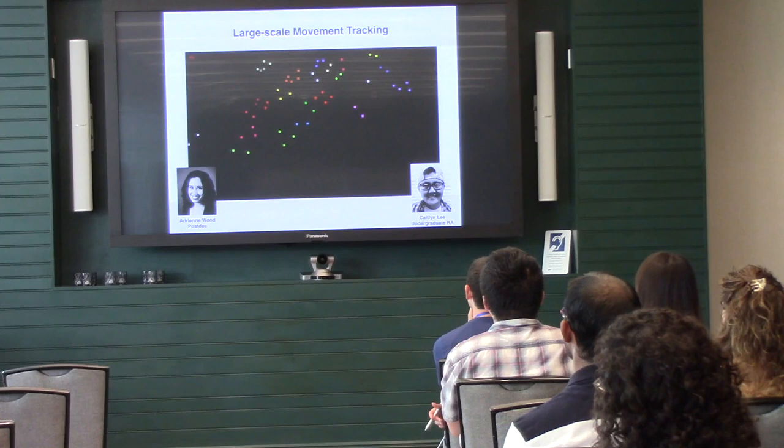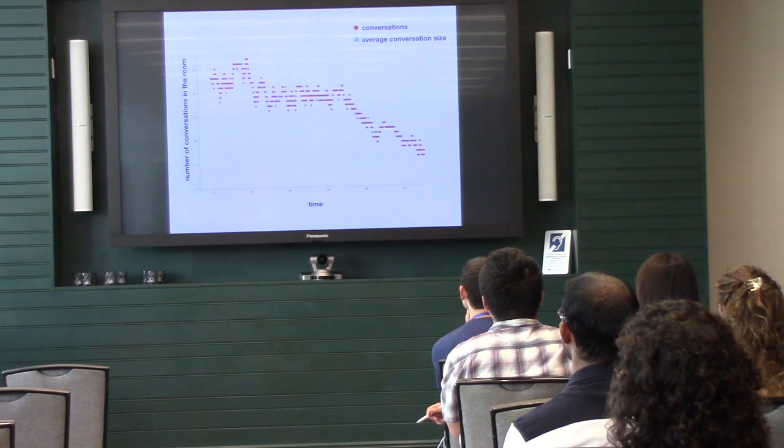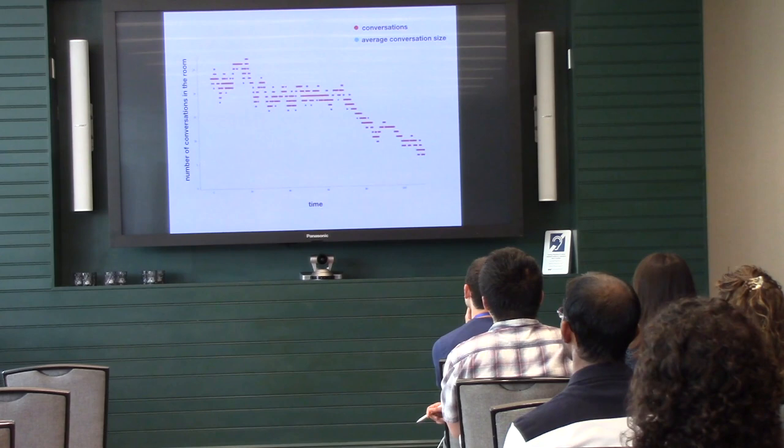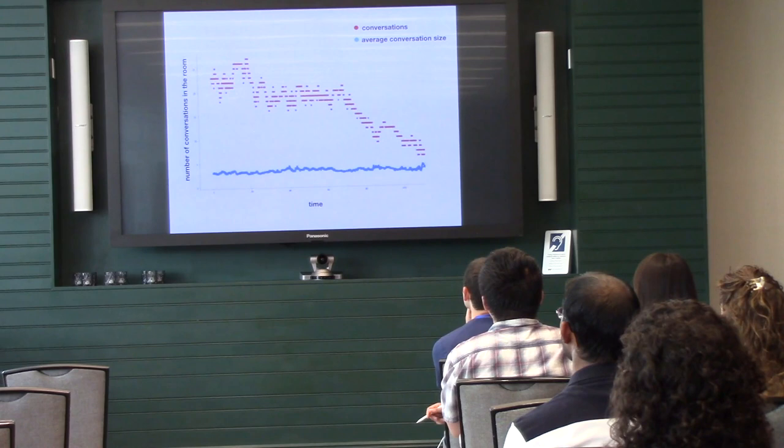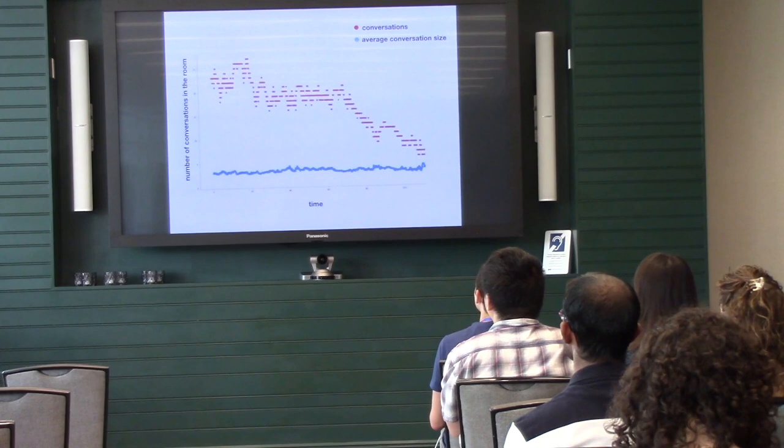And you can start to see that people split off, and conversations stay stable for a while, and then they kind of disperse. If they get too large they disperse. With this kind of data, you can see interesting things. This is just number of conversations in the room over time. It turns out that there's some 20 to 30 conversations going on in the room at the beginning of this thing, and then over time people sort of dwindle away. But interestingly, if you look at the average conversation size, it's just flat. Average conversation is always four people, basically, give or take one.